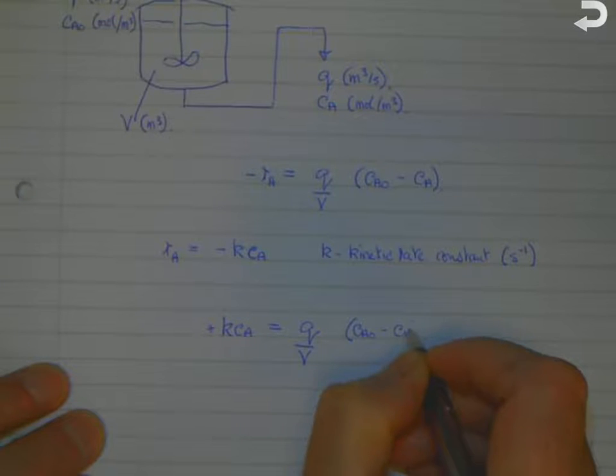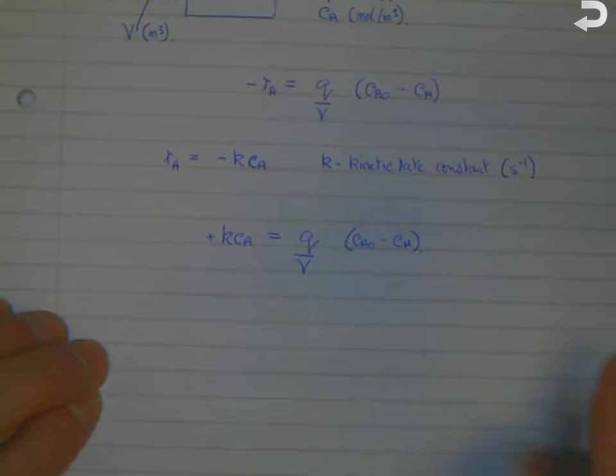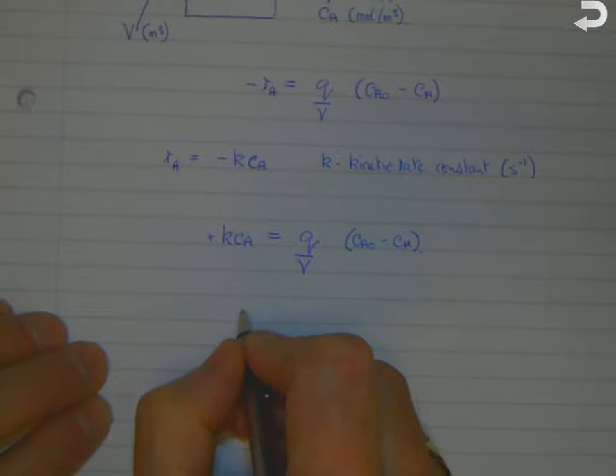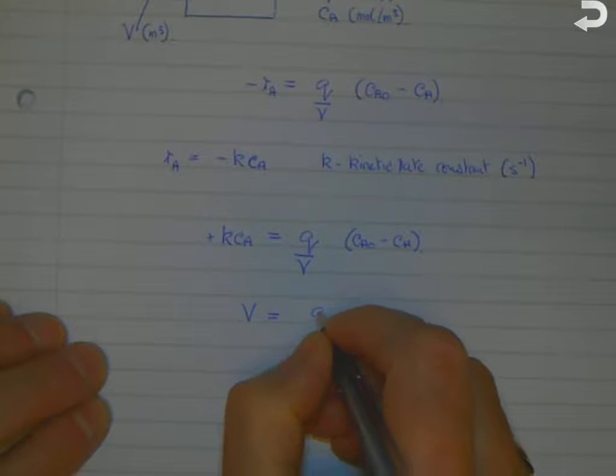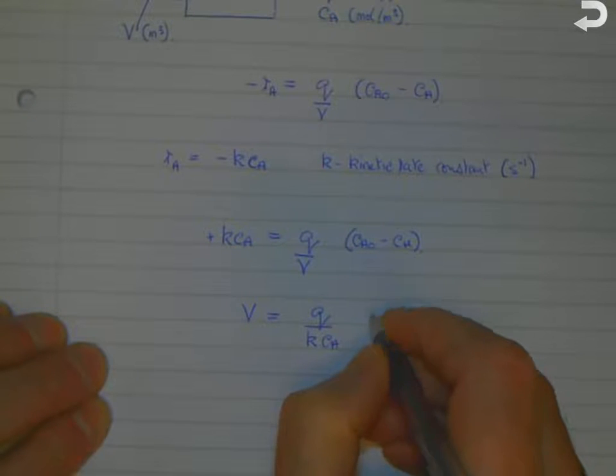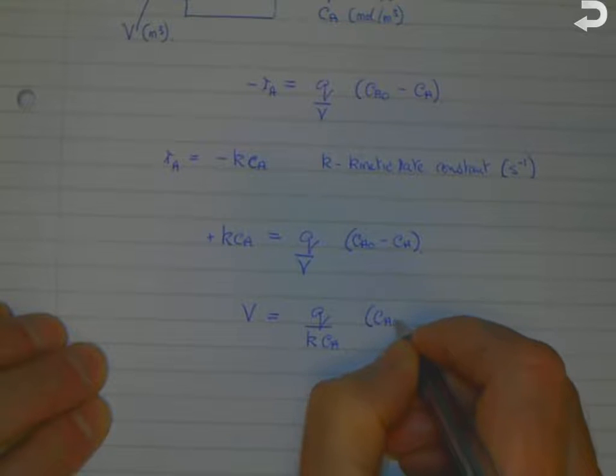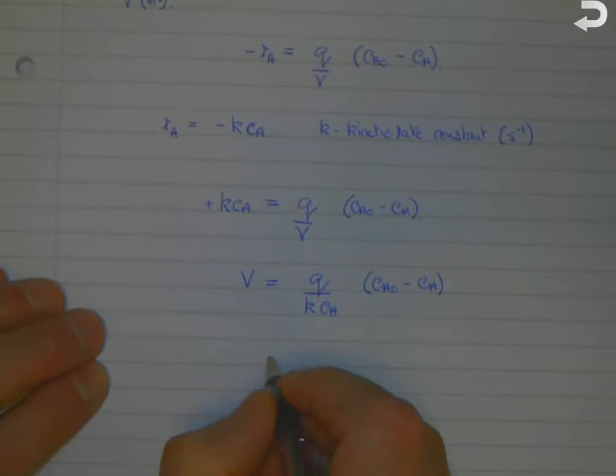If we're doing a design calculation to calculate the required volume, we get V = Q/(kCA)(CAo - CA). We can then collect the concentration terms.